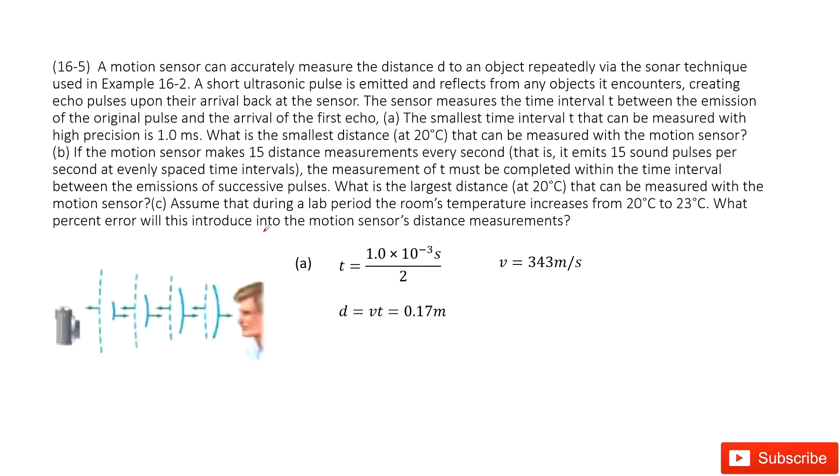In this question, we talk about motion sensors. We can see the first question tells us the smallest time period p is 1 ms, and the temperature is given. Ask you to find the distance that can be measured. So we are asked to find the smallest distance. This distance is from one sound wave to another sound wave. This is the smallest distance that the sensor can measure.